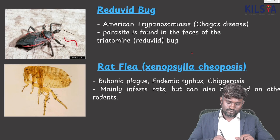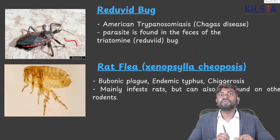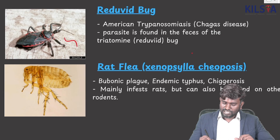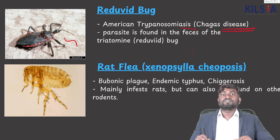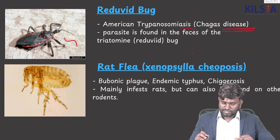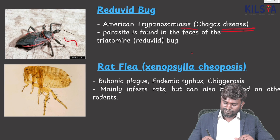This image is going to be called the Reduviid Bug. It is American Trypanosomiasis and causes Chagas disease. The parasite is found in the feces of Triatomine — the Reduviid Bug.